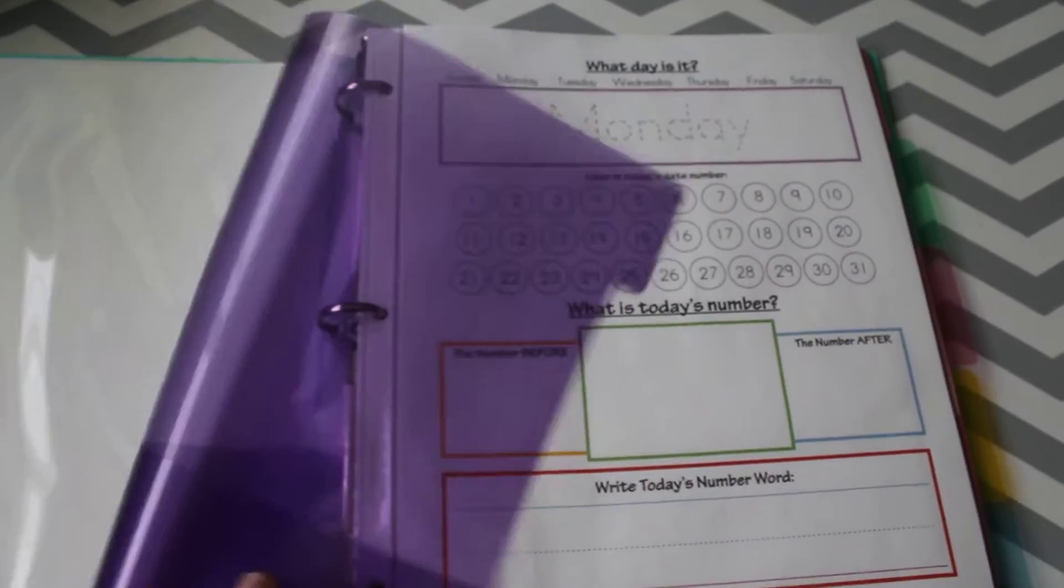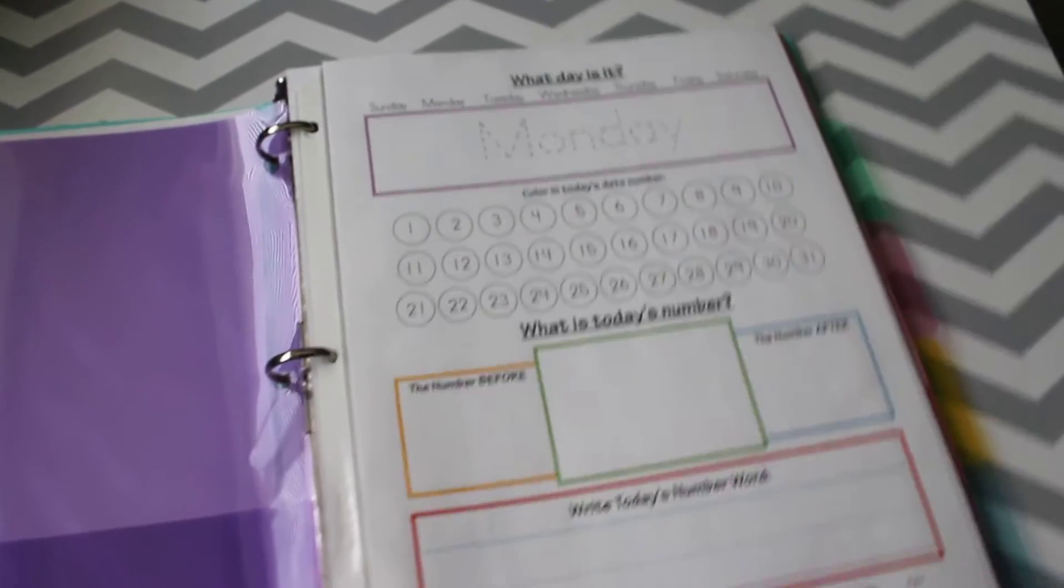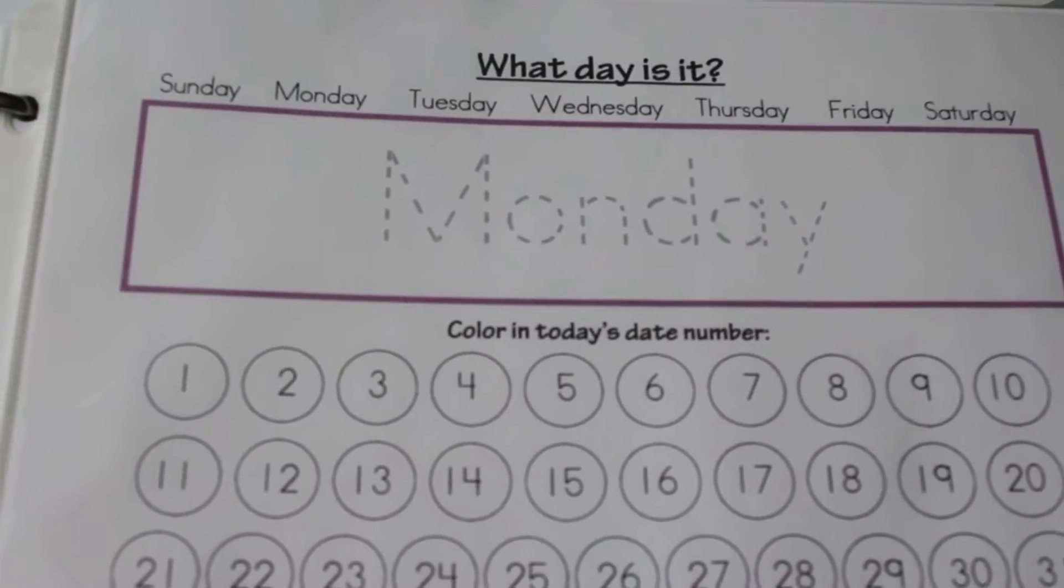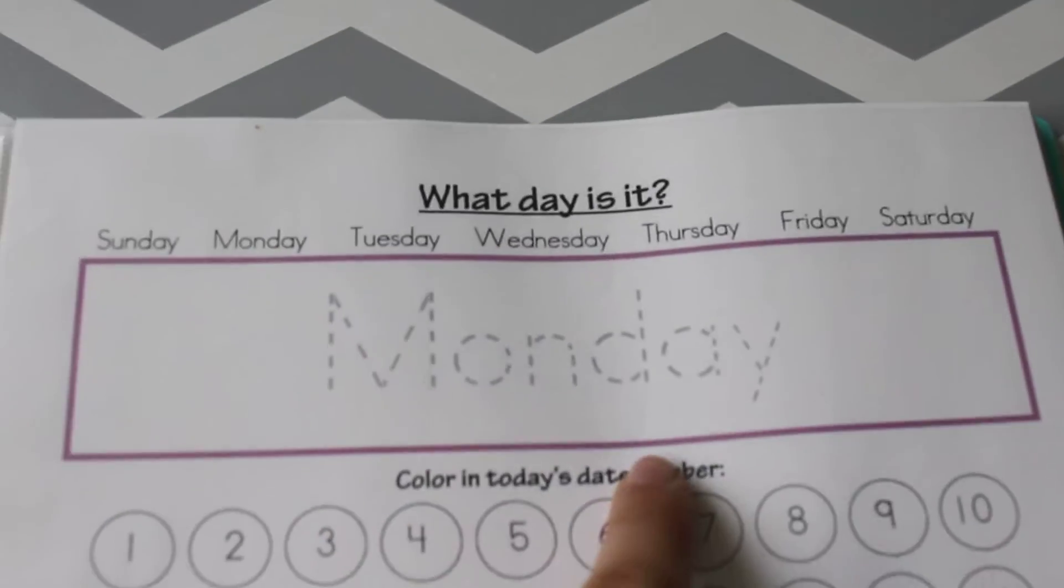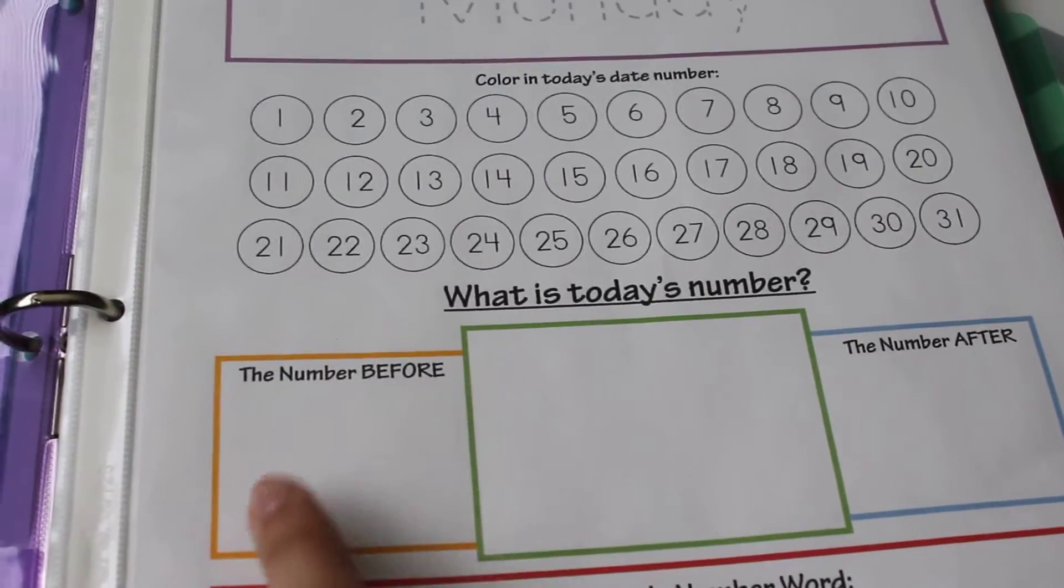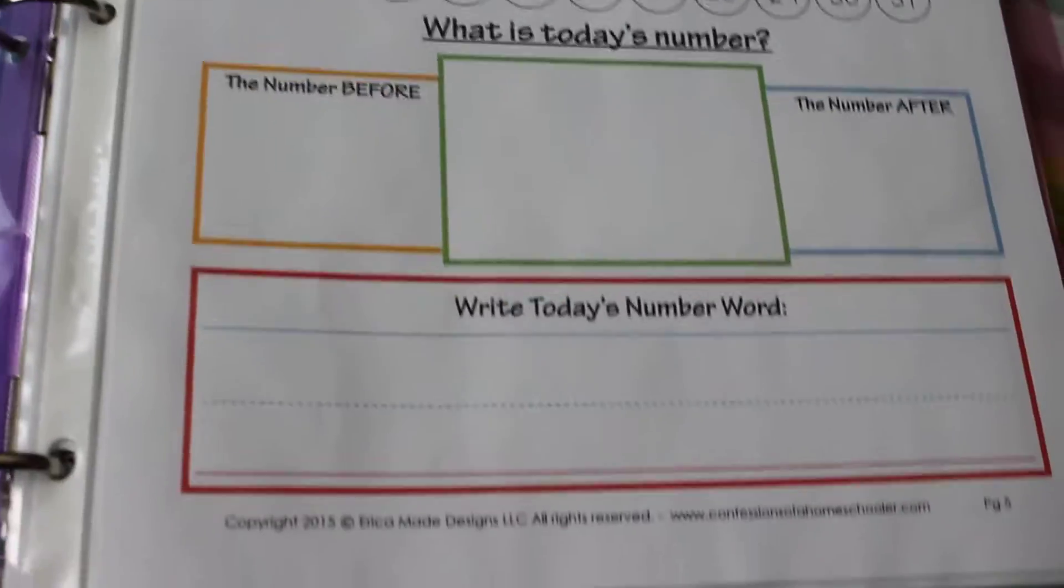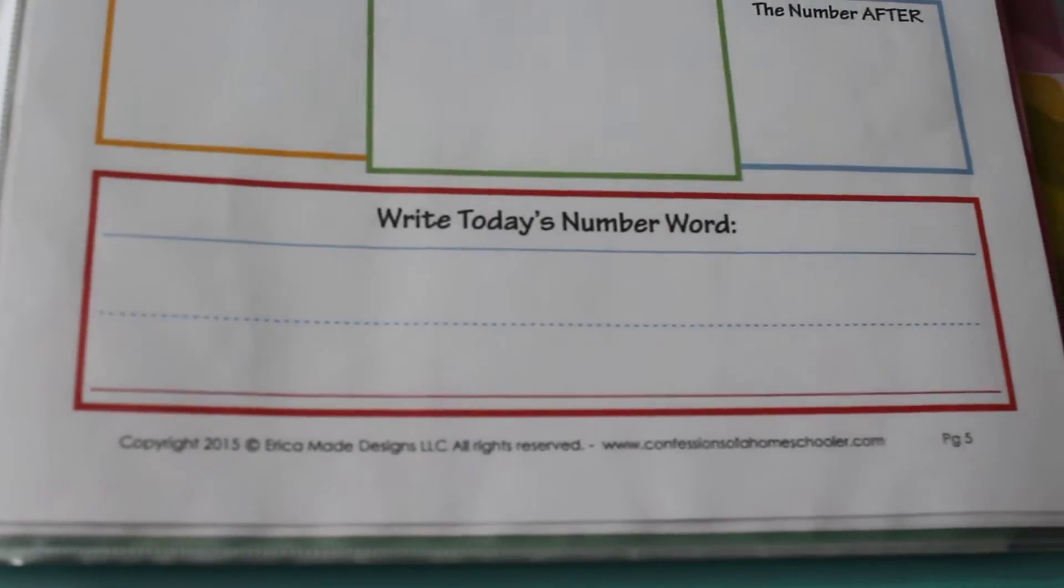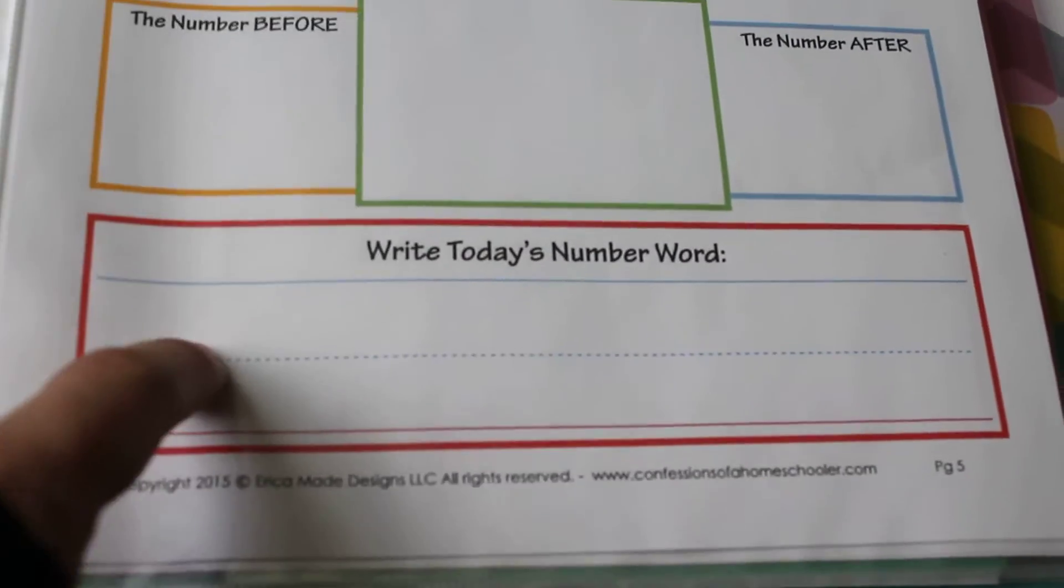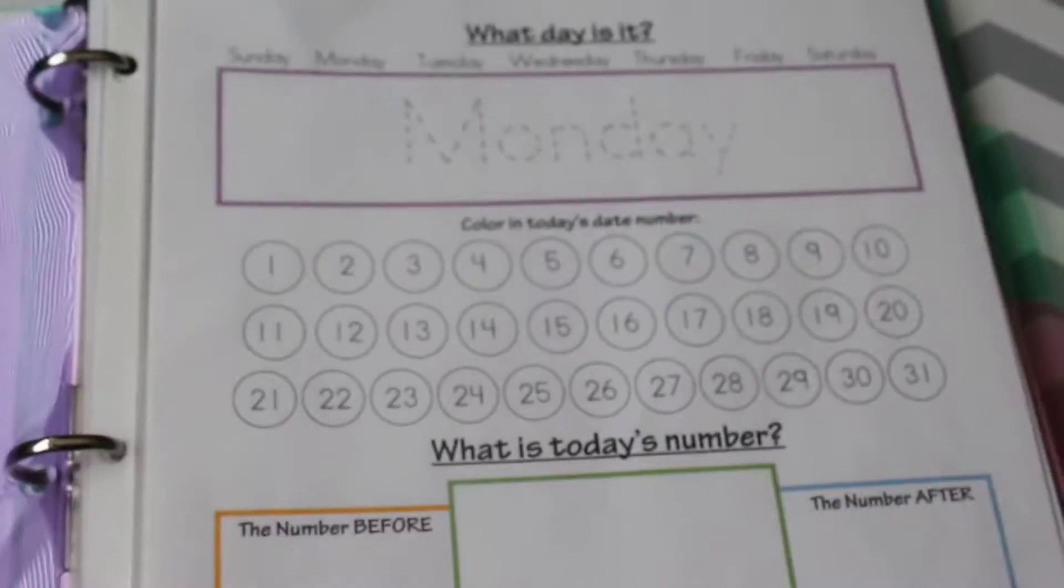This first tab is just what they're going to be doing every day, their daily work. They'll hop in here and spend a few minutes doing this stuff. This first one is what day is it - I'm gonna have them circle the day of the week and then trace it, color in today's number, and then write the day's number. I'm not sure if we're gonna do the before and after number.